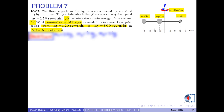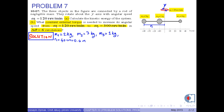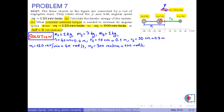First of all, conventionally, we write the given quantities in the SI unit system. Here, kilograms is already an SI unit. However, centimeters is not an SI unit and it is converted into meters. Also, revolutions and revolutions per minute are not SI units and they are converted into radians and radians per second respectively.